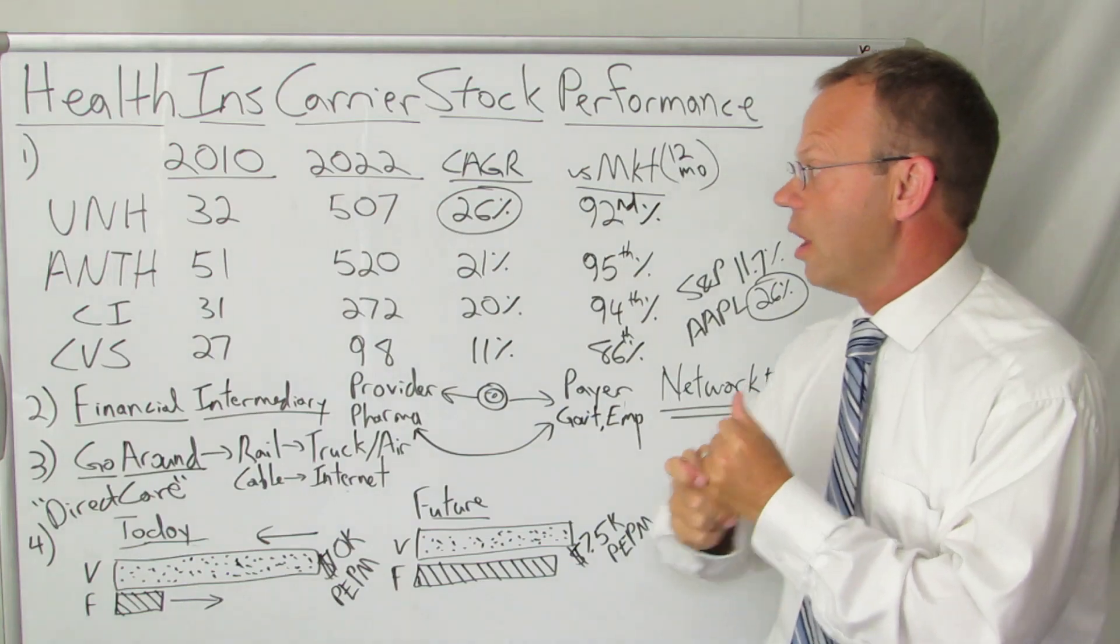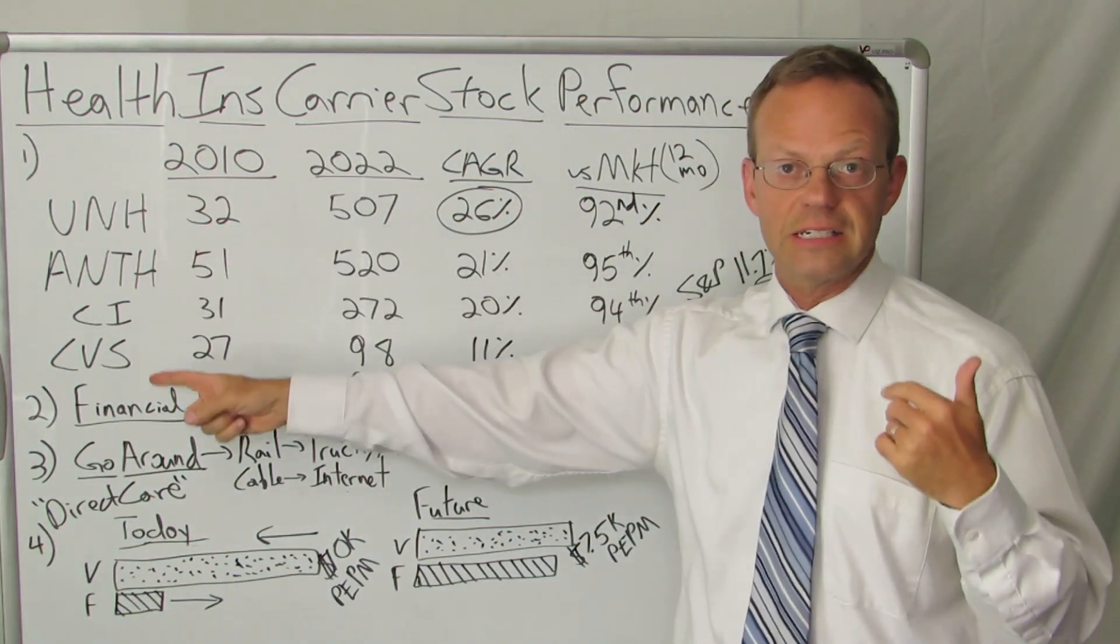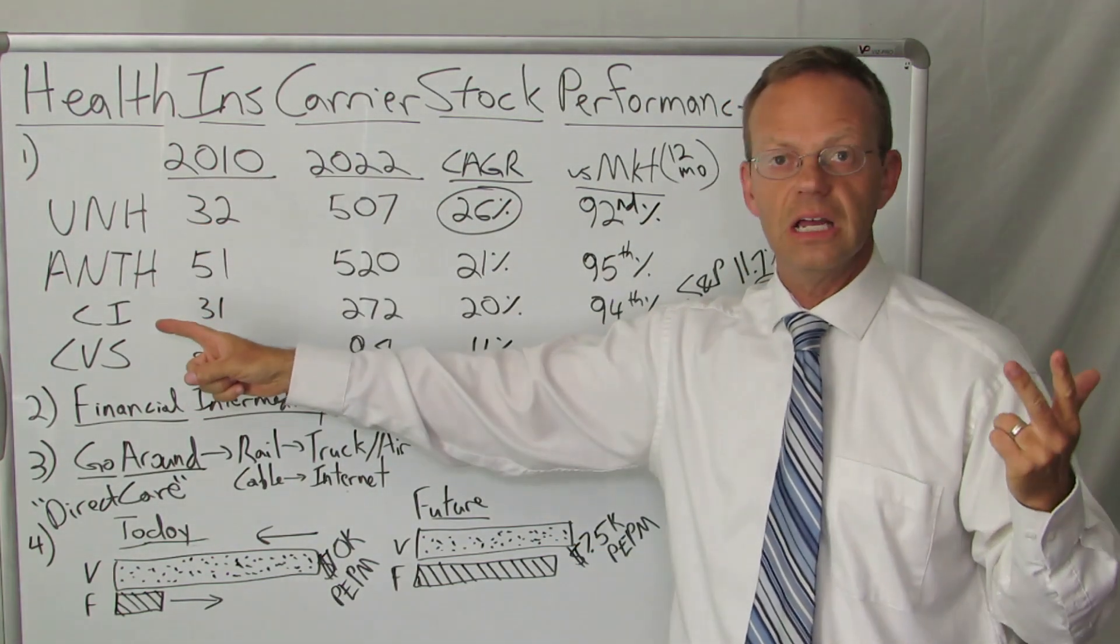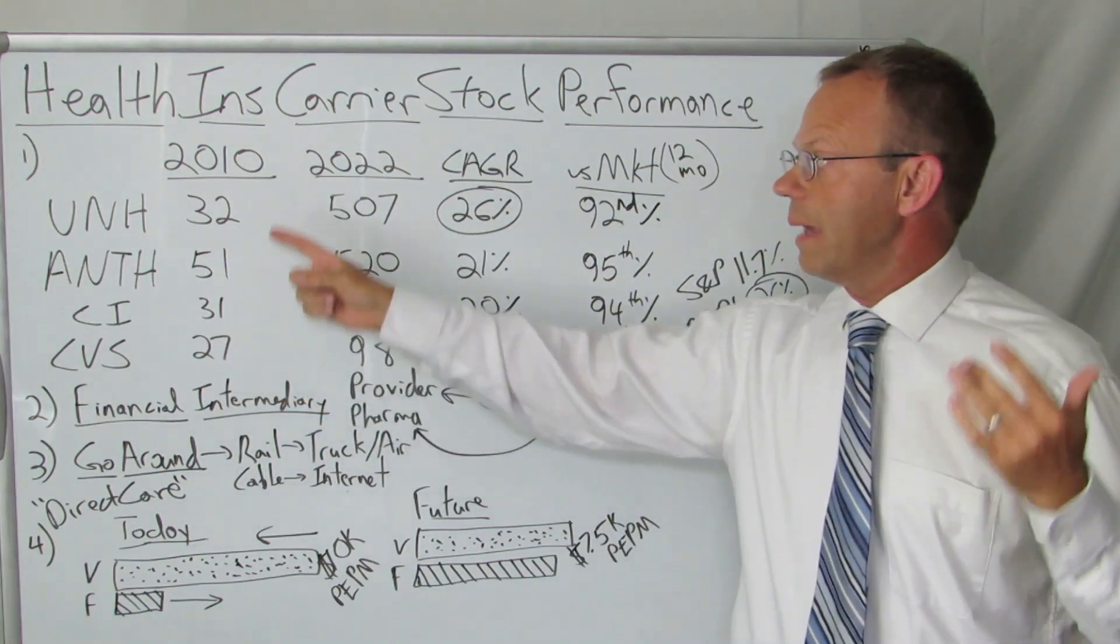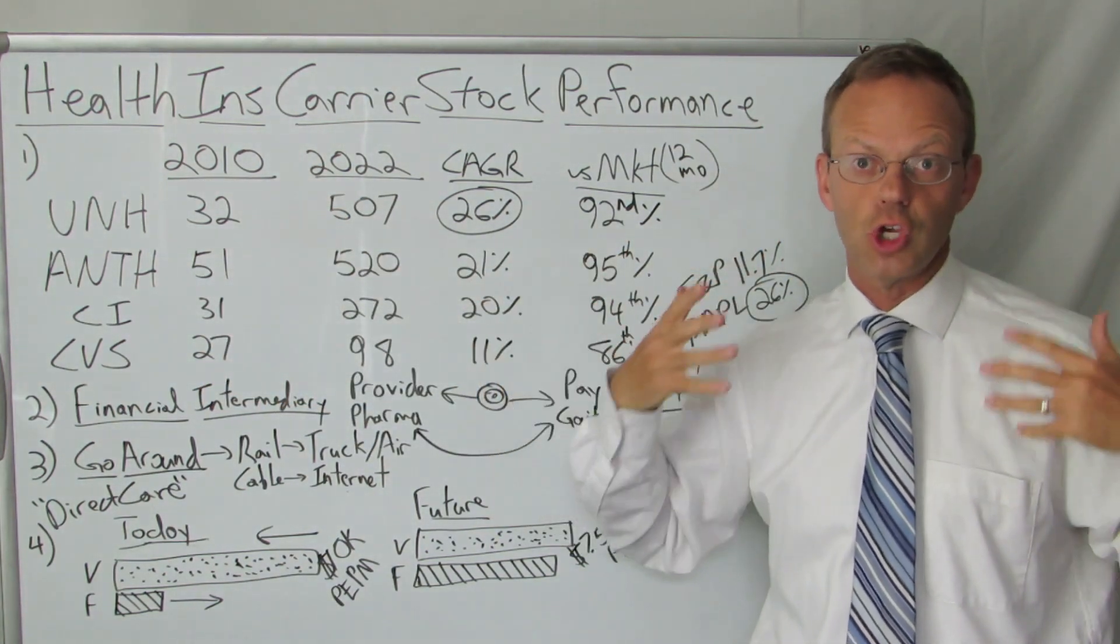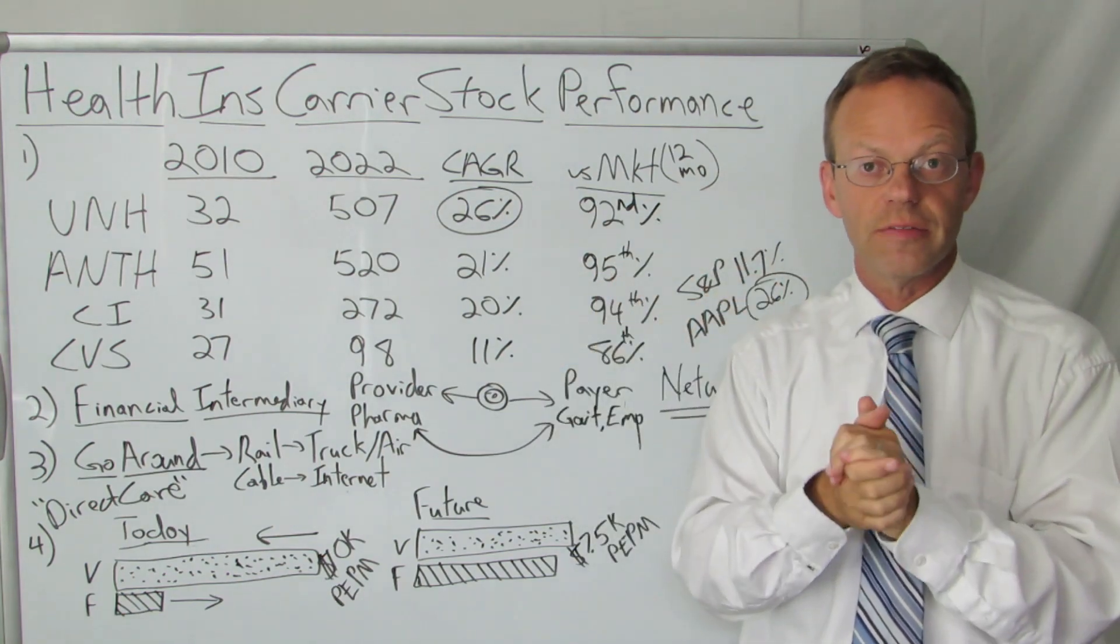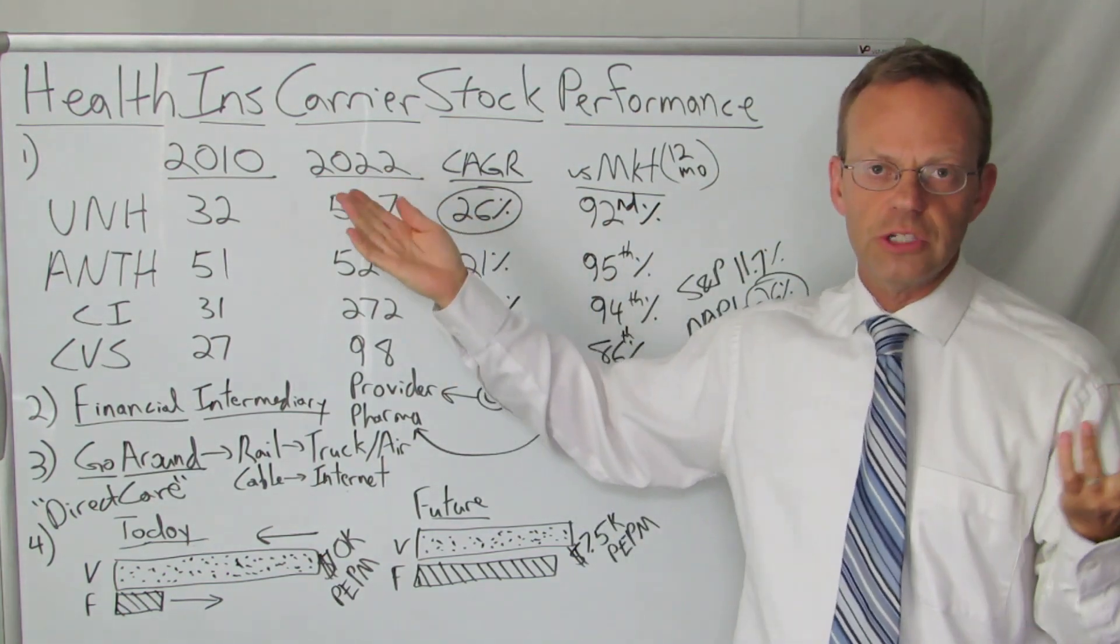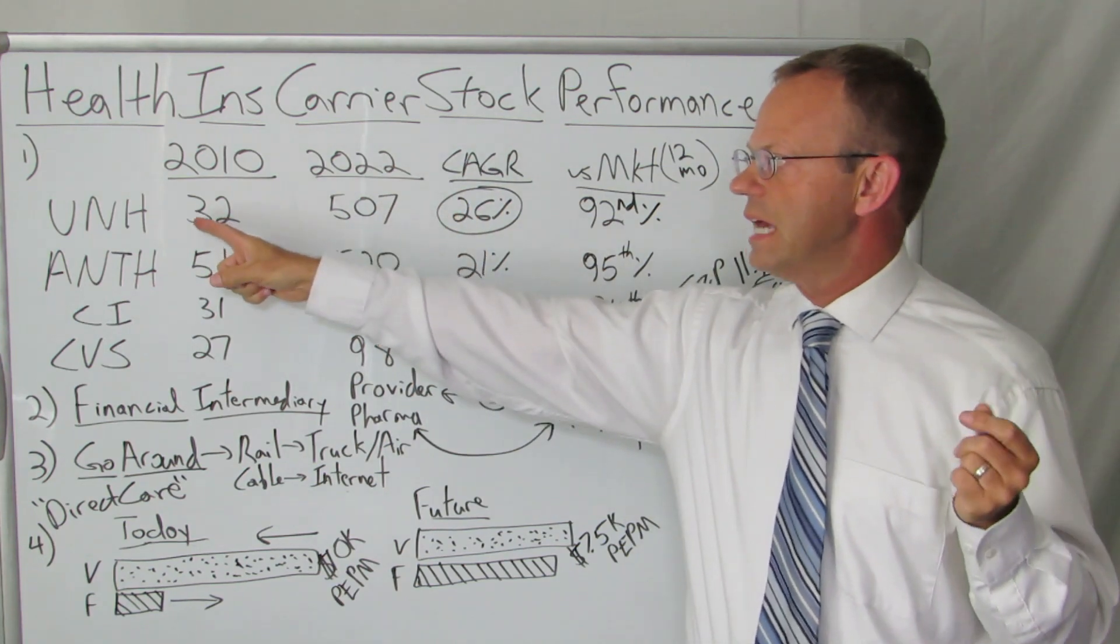With that being said, the performance of health insurance carrier stocks has been super awesome. Let's go through that. What we have here is the stock tickers for UnitedHealthcare, Anthem, Cigna, and CVS Aetna. I picked the starting year of 2010 because that's when the ACA passed.